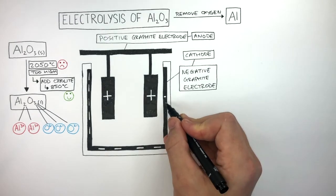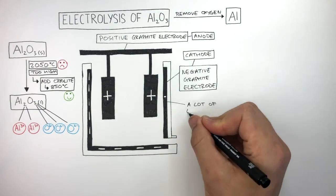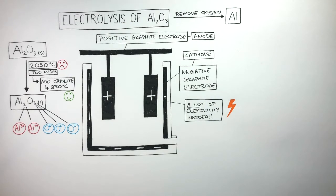Now before we continue, it must be noted that a lot of electricity is needed in the electrolysis of Aluminium Oxide. You wouldn't believe it, but the same amount of electricity is used in a small town compared to a factory which carries out the electrolysis of Aluminium Oxide.